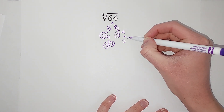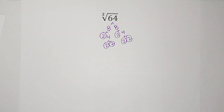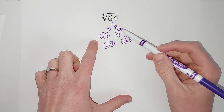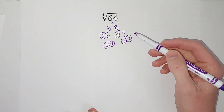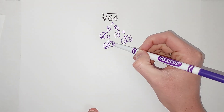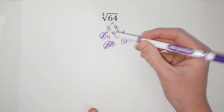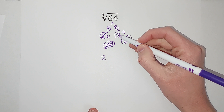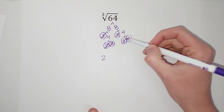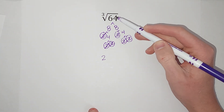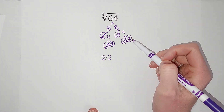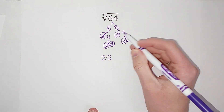Now we are looking for a group of three numbers. What this is telling me is two times two times two times two times two times two gives me 64. I see a group of three twos, so I'm going to pull a two out to the outside. Here's another group of three twos, so I'm going to pull that out to the outside as well. And then there's nothing left.